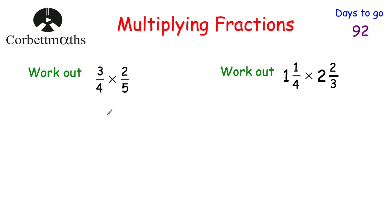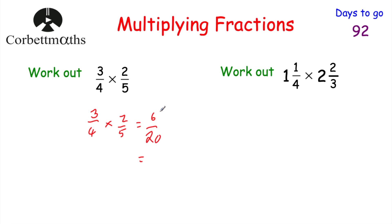Okay, so in terms of the first one, let's multiply the numerators: 3 times 2 is equal to 6. And then the denominators: 4 times 5 is equal to 20. Now we've got 6 twentieths, which can be cancelled down — dividing both of those by 2 gives us 3 tenths. So 3 quarters multiplied by 2 fifths would be 3 tenths.